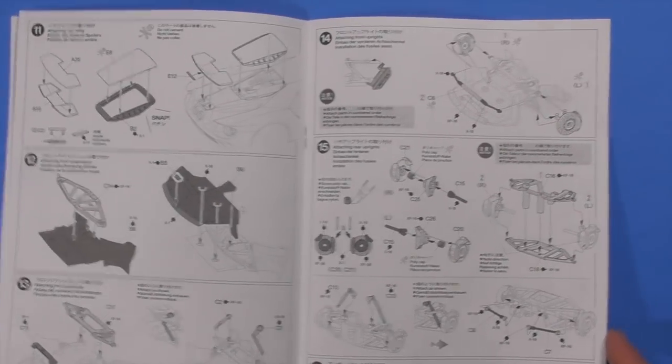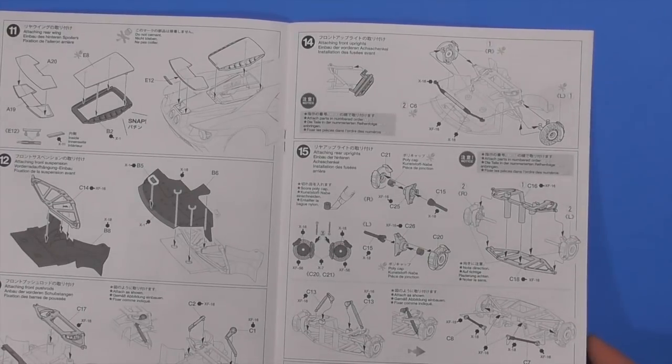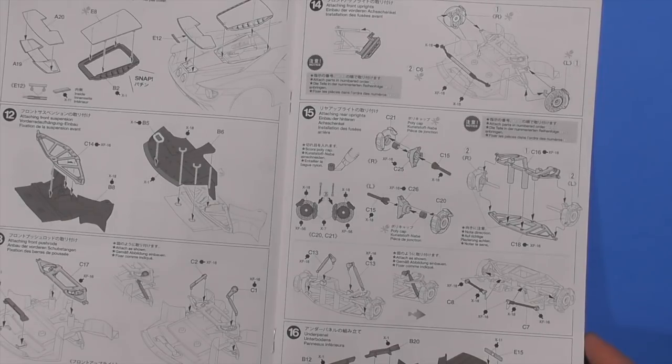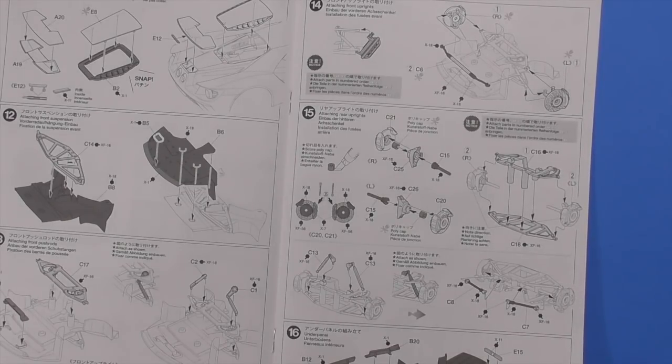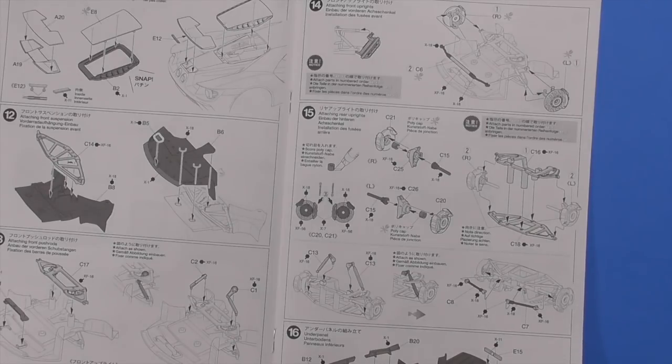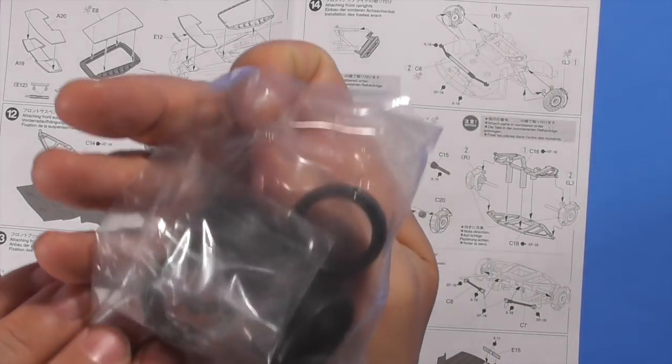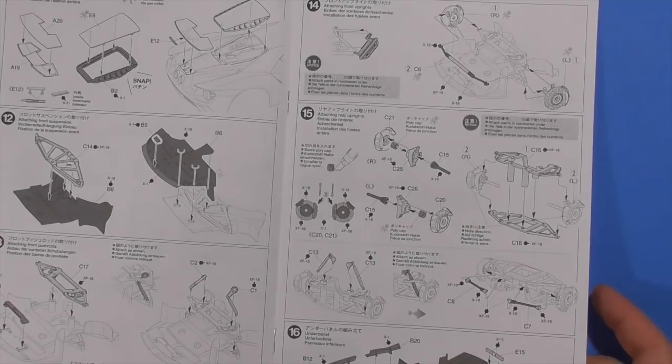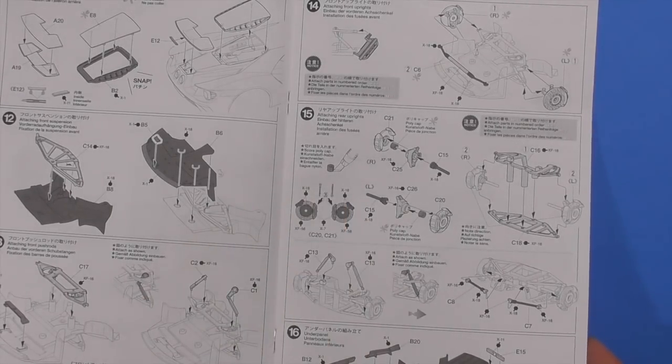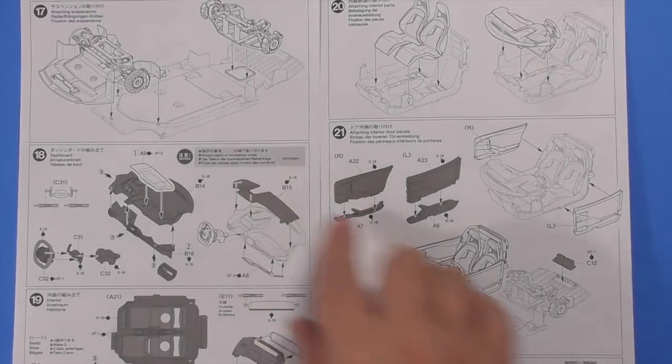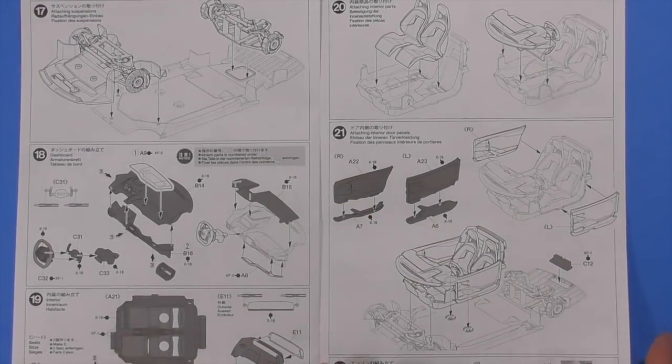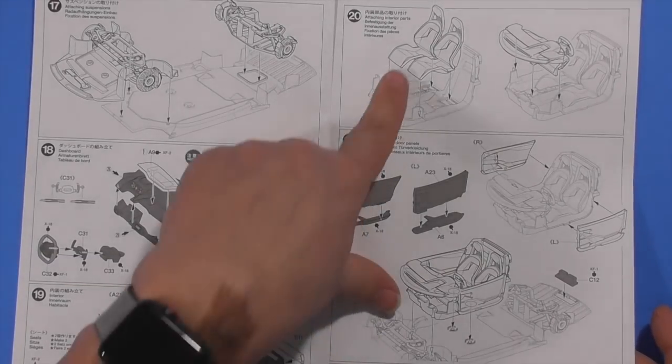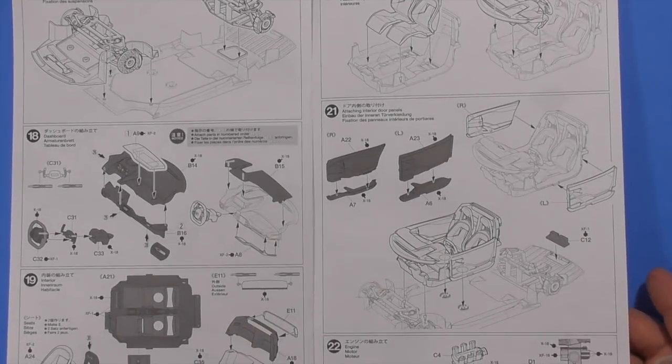Front suspension, front uprights, attaching the rear uprights. I didn't see any poly caps in here. Well, poly caps are in with the tires, right there. Because you have poly caps for all those. And here it says to score the poly cap, which is something I've never done before. Attaching the suspension to the floor pan. Doing the interior. Steering wheel decals. Seats. You're going to have to do your own seat belts, but there's many ways to do those. There's lots of tutorials online.